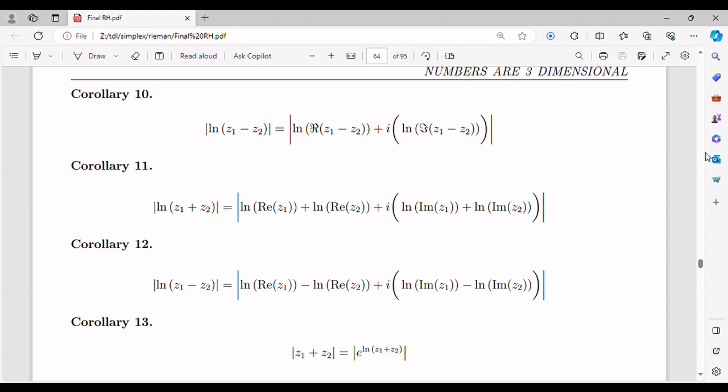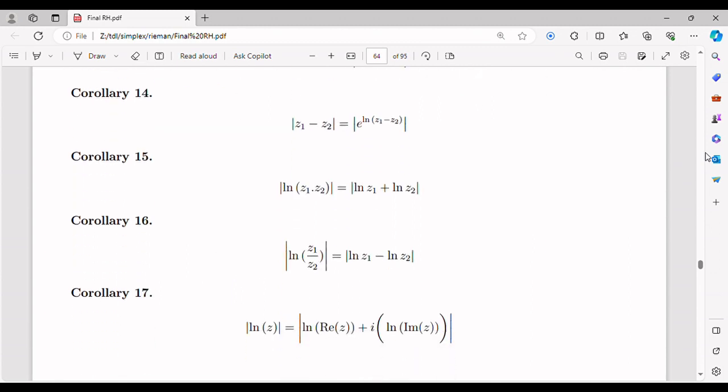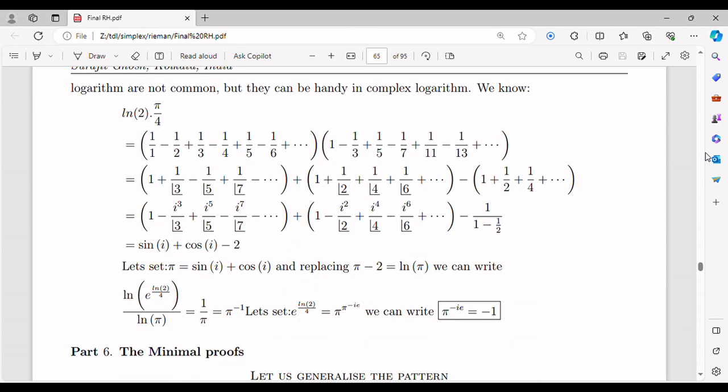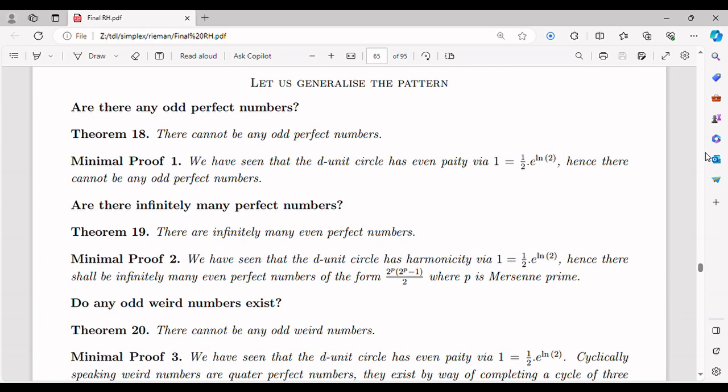In physics, the merger of imaginary and real numbers would have profound consequences. Quantum mechanics, a fundamental theory describing the behavior of particles at the microscopic level, heavily relies on complex numbers. The wave function describes the probabilistic behavior of quantum systems, such as electrons, atoms, and molecules. It provides information about the particle's position, momentum, and other physical properties.